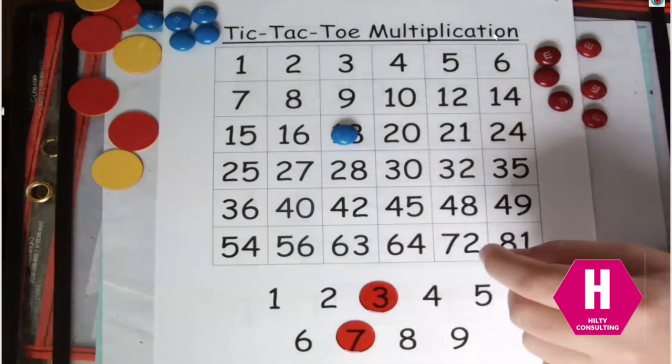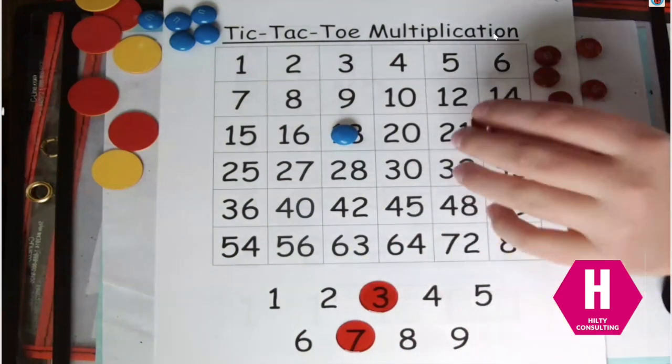Okay, so what's your new equation? Three times seven equals 21. So he's going to cover over 21.